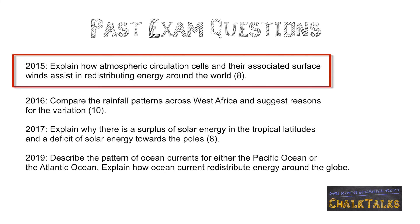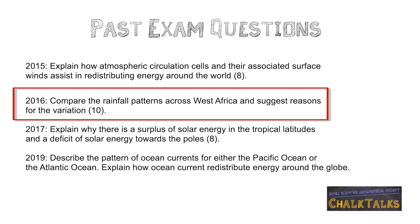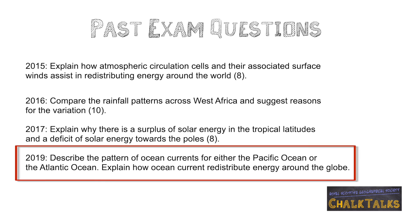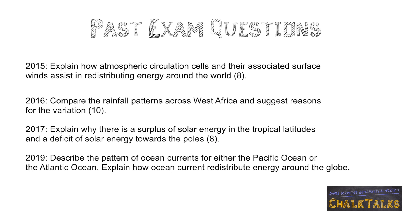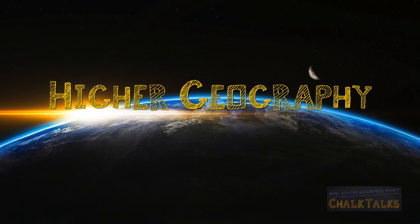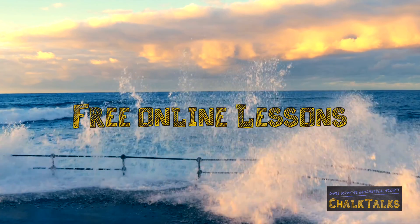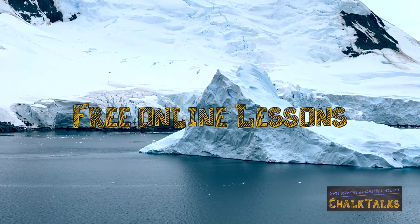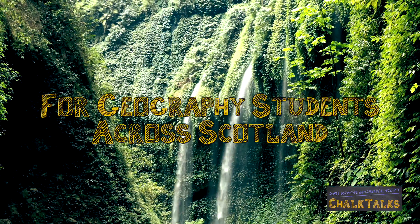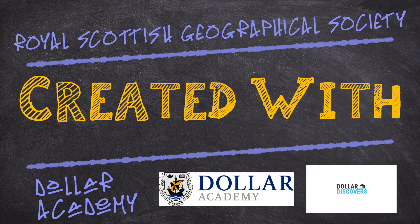These are a selection of past exam questions. In 2015 it was about atmospheric circulation and the surface winds. In 2016 it was about the ITCZ. In 2017 it was the global heat budget. And in 2019 it was about ocean currents. None of them should now be a surprise.